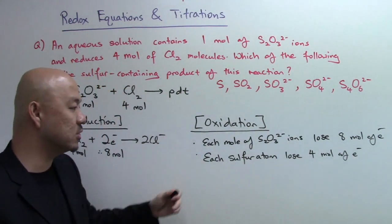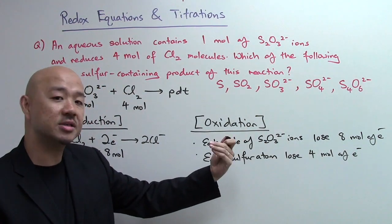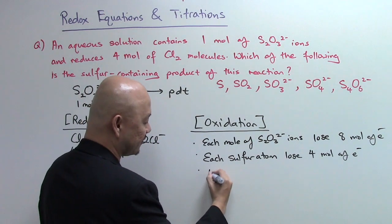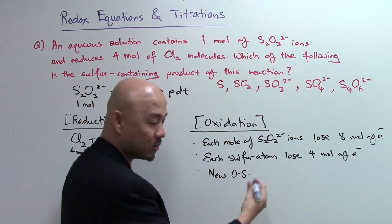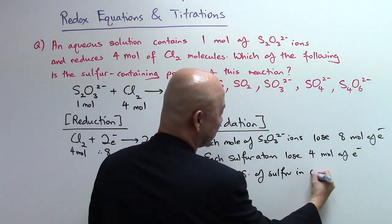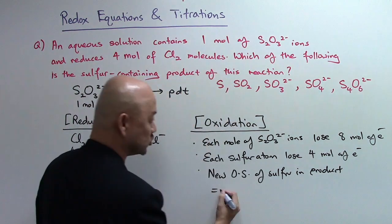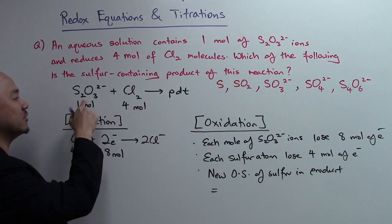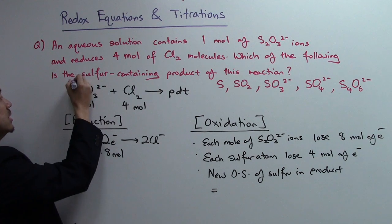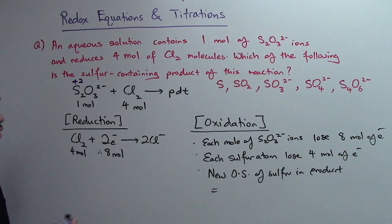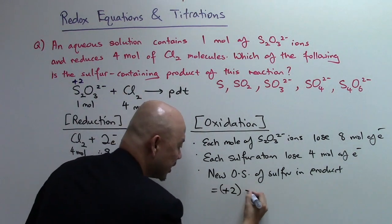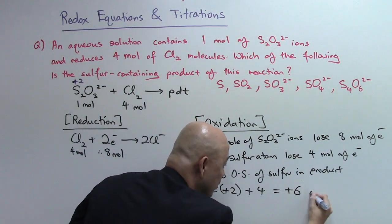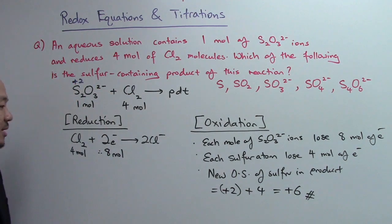Now electrons are negative charge. So if you lose the electron, it means your oxidation state you're going to add back - it will be a positive value. We can directly find the new oxidation state of the sulfur in the product. What do we have originally? S2O32-. What is the oxidation state of sulfur over here? If you do a quick calculation, this is actually plus two. So you're going to have plus two and then each sulfur loses four more electrons so it's plus four. So you get your new oxidation state to be plus six.